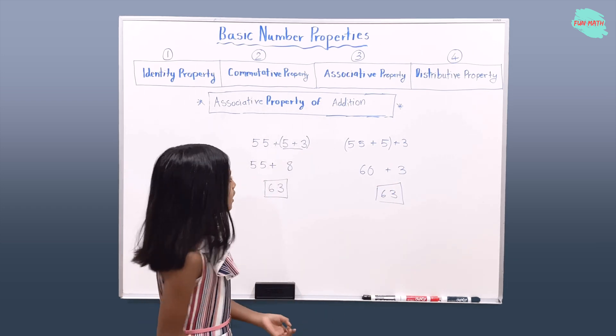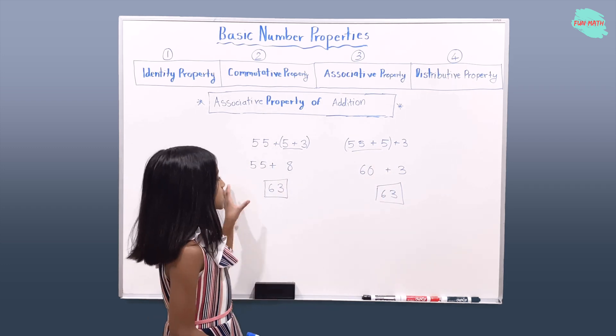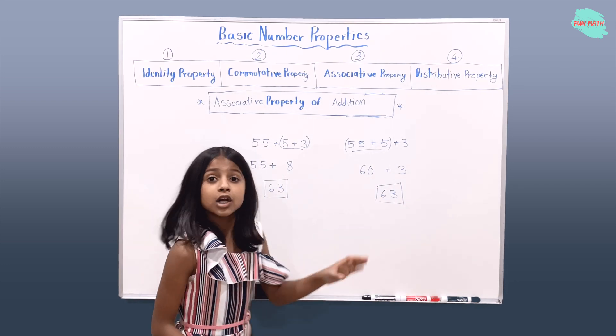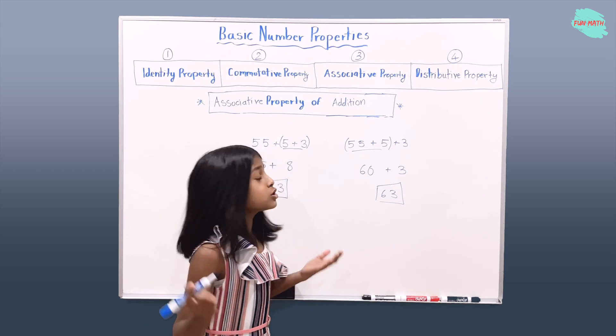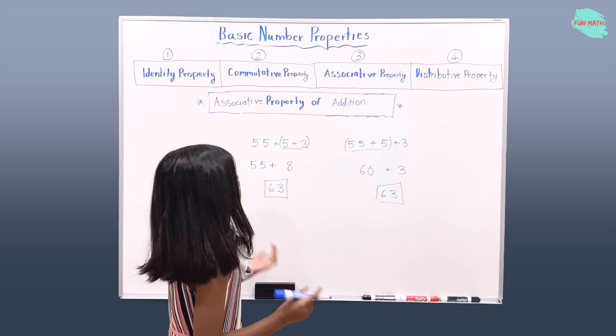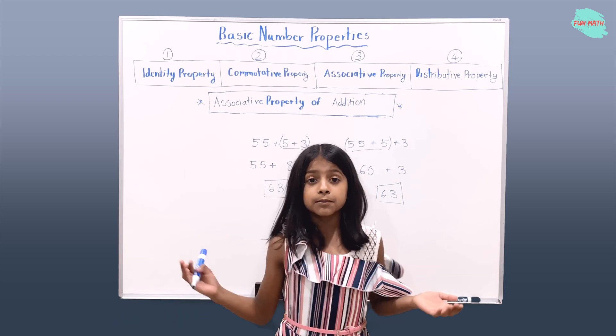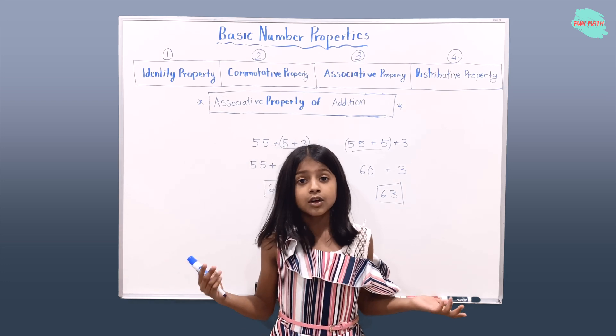So if you see here that the sums for this problem and this problem are the same even though your associatives are different. So now you tell me which problem is easier to solve. Which one?